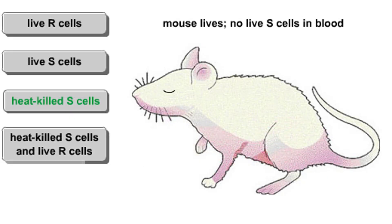Mice injected with S cells that were killed by exposure to high temperature remained healthy. When Griffith examined blood samples from these mice, he found no live bacteria.